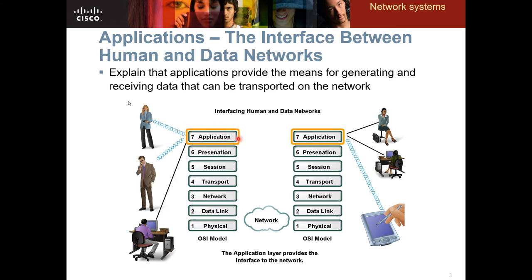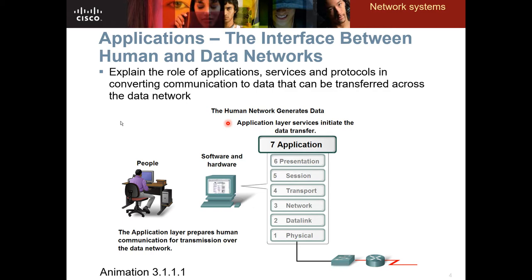Looking at the OSI model, the application layer is at the top — Layer 7 — and it is the primary contact point for the end user and the computer. It also acts as an interface to the network. The computer accesses the internet through the physical layer, but we cannot understand ones and zeros. As end users we need the application layer, which gets data into a format we can understand.